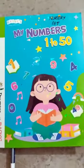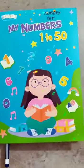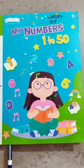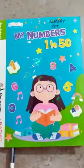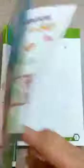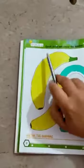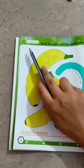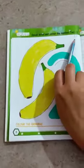Today we are going to do work in book. My numbers 1 to 50. Open your book. Open page number 8. Write down the date, left side of the page and classwork this side.